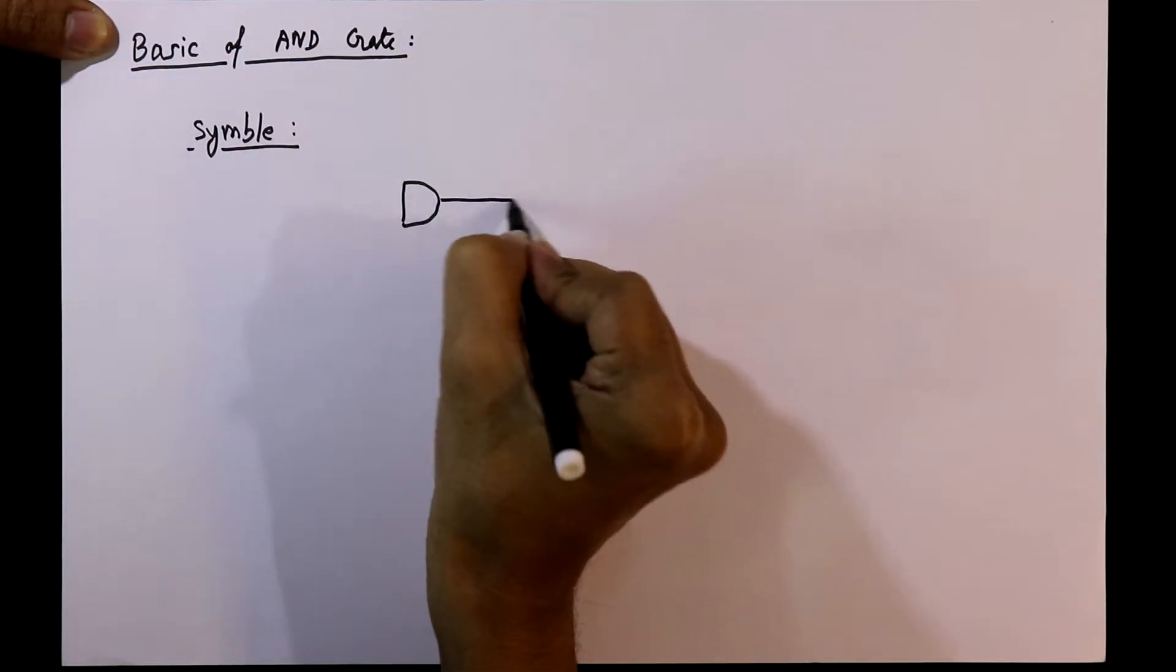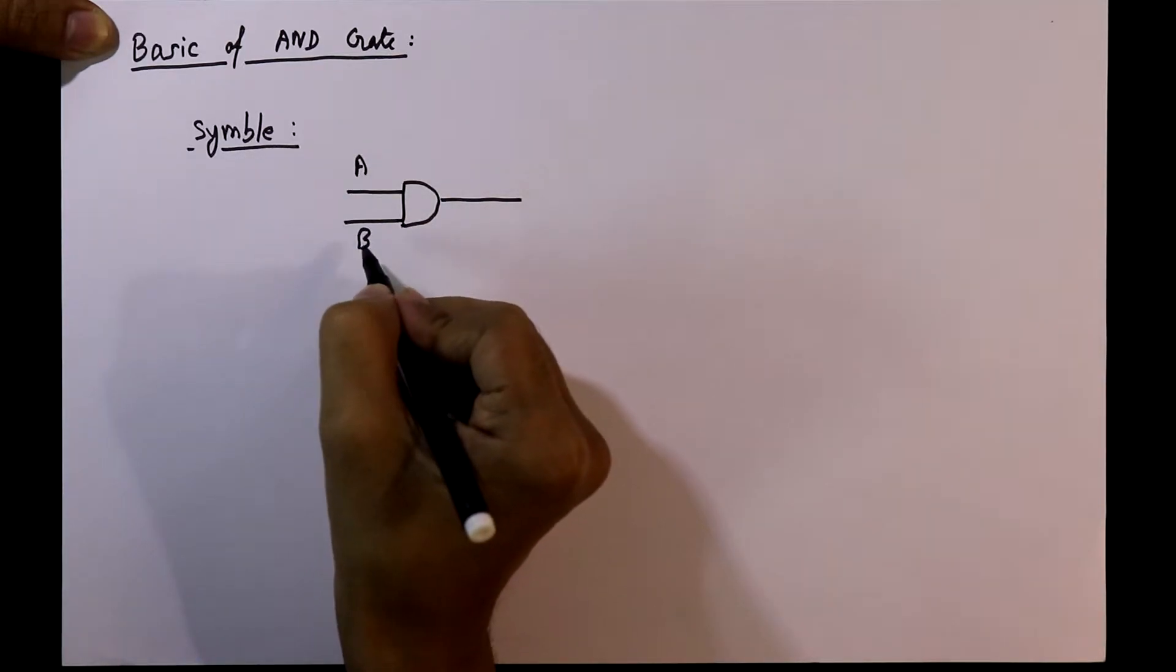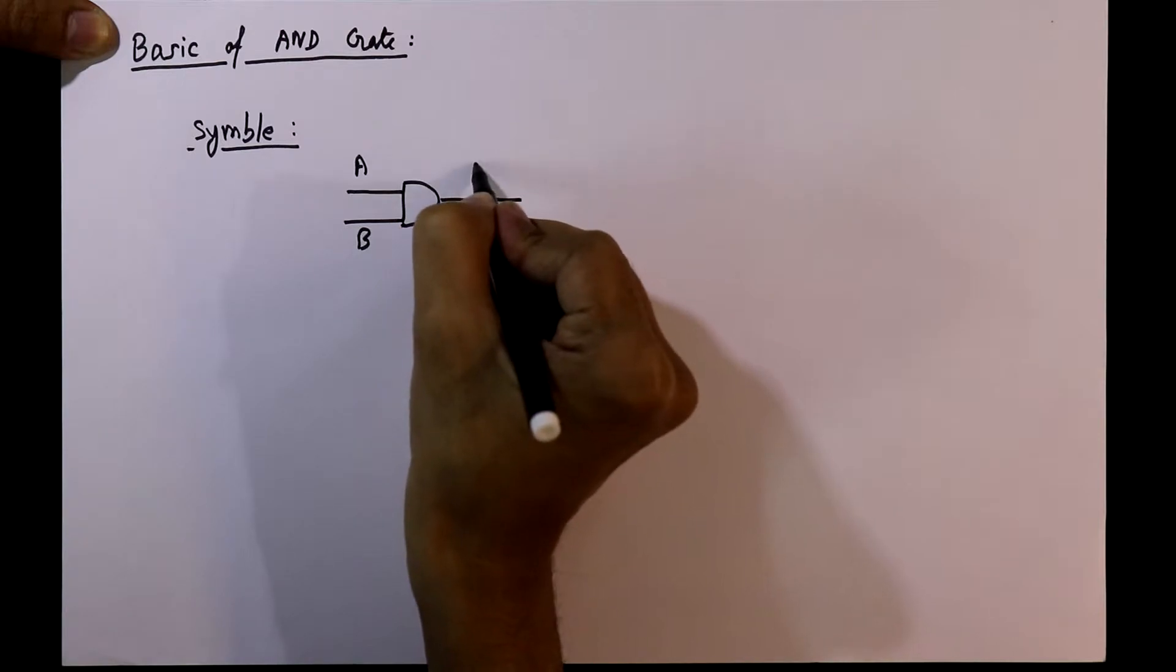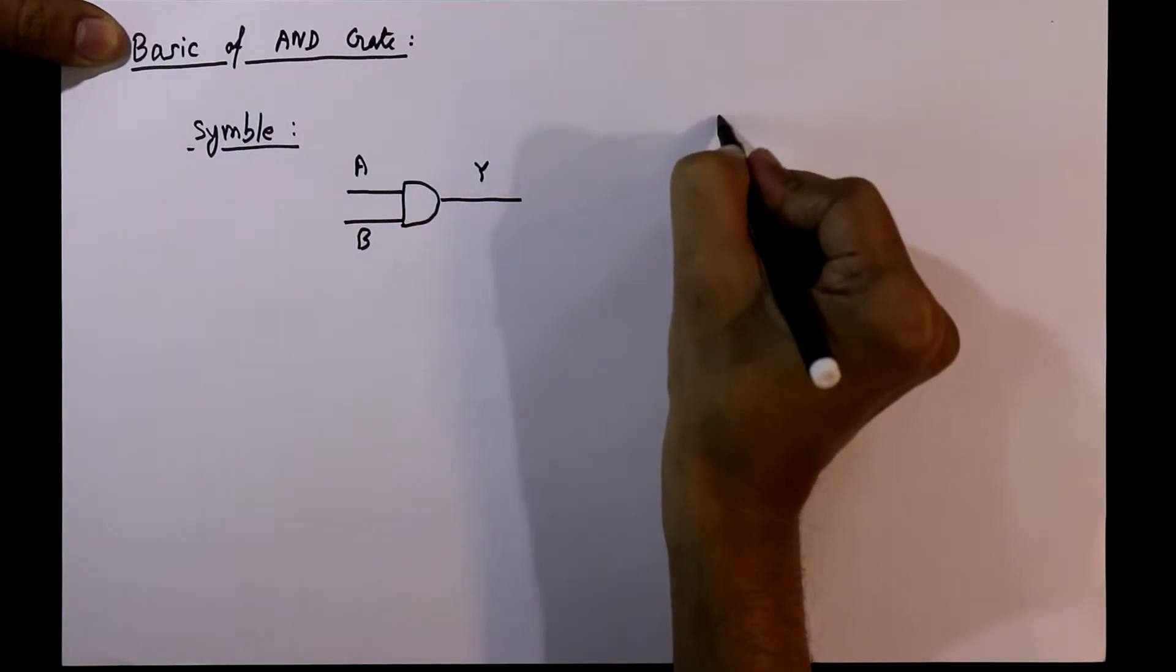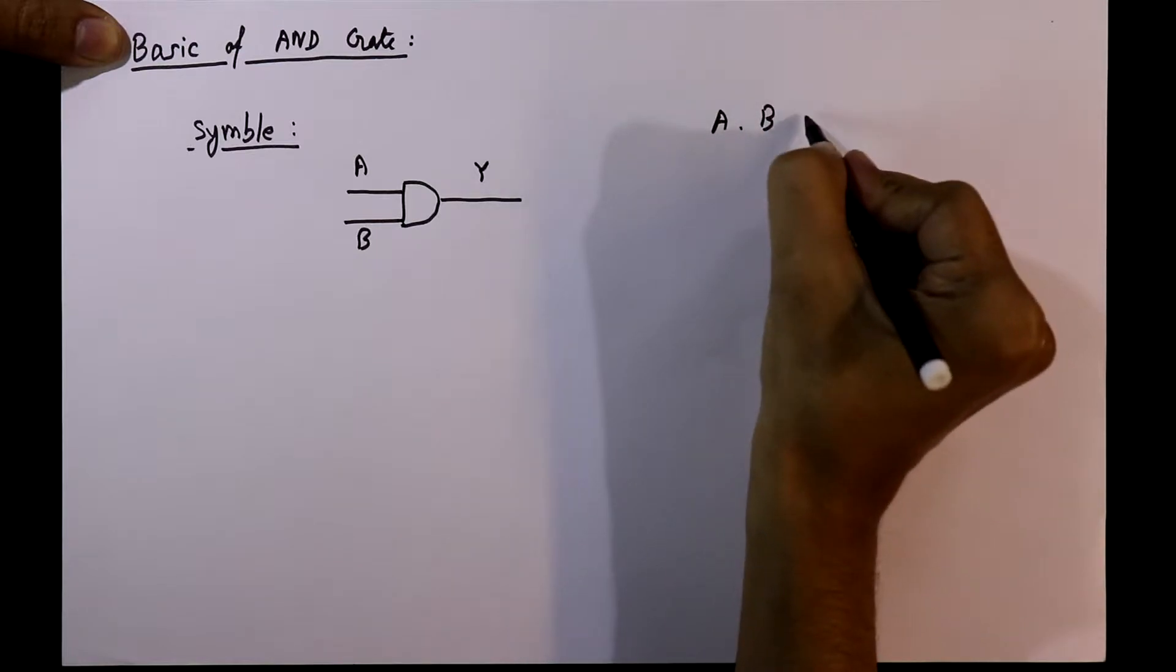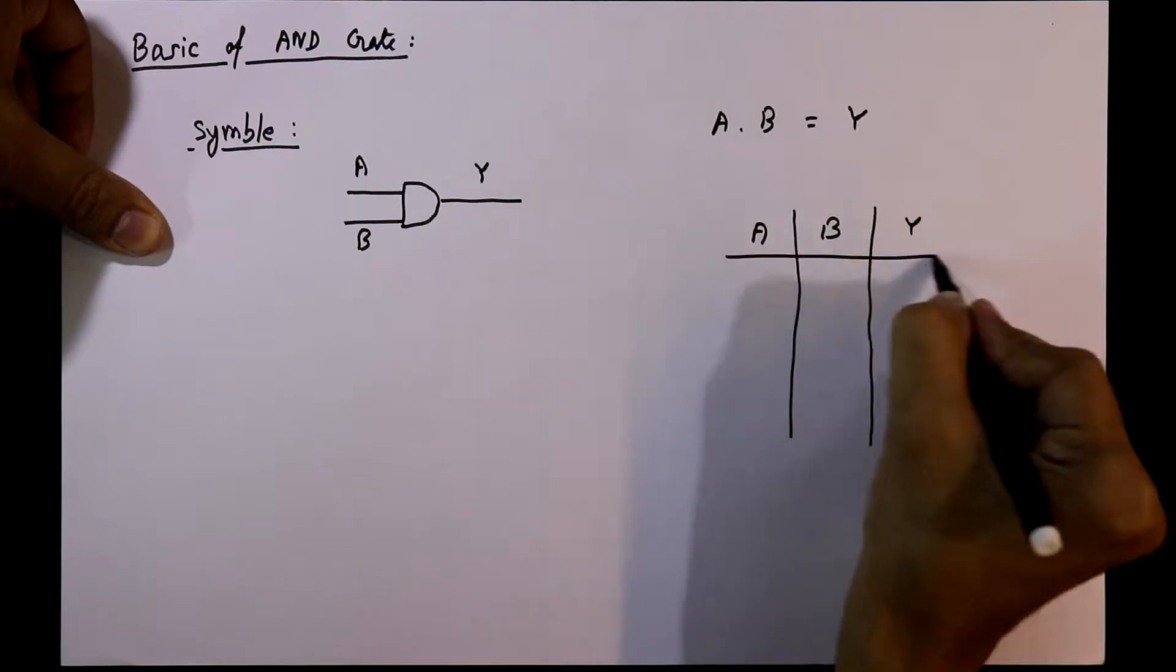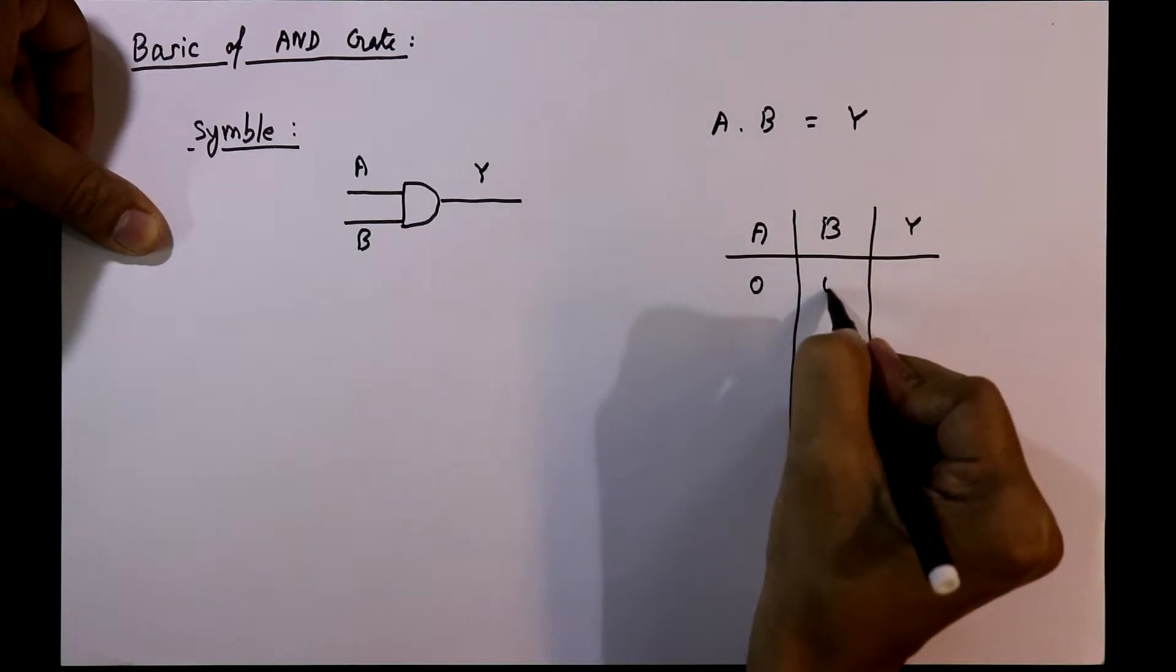The symbol of an AND gate is like this and it has two inputs A and B, and the output is Y. Its mathematical expression is A into B equal to Y, and its truth table: when both inputs are 0, the output will be 0.